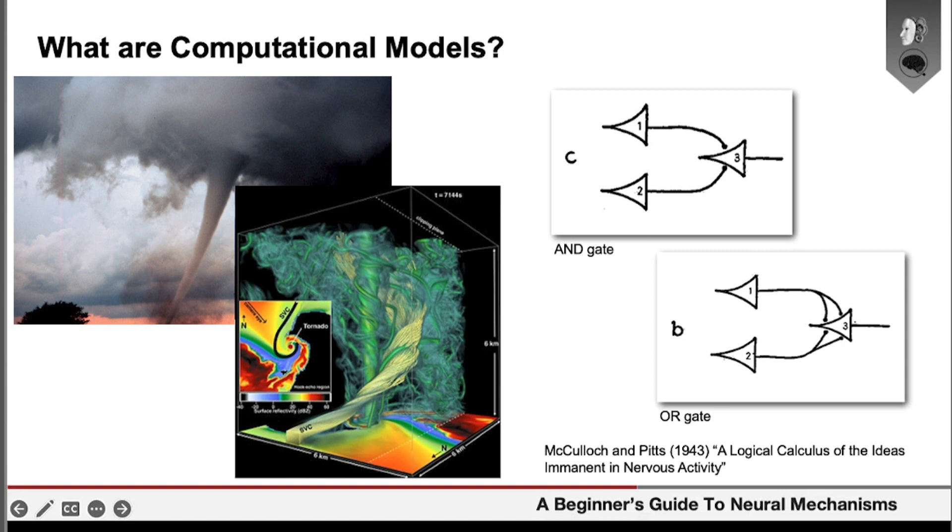What you have is a set of really complicated dynamical equations about how things like pressure and temperature change over time and how these give rise to those wind patterns that swirl around like in this tornado.